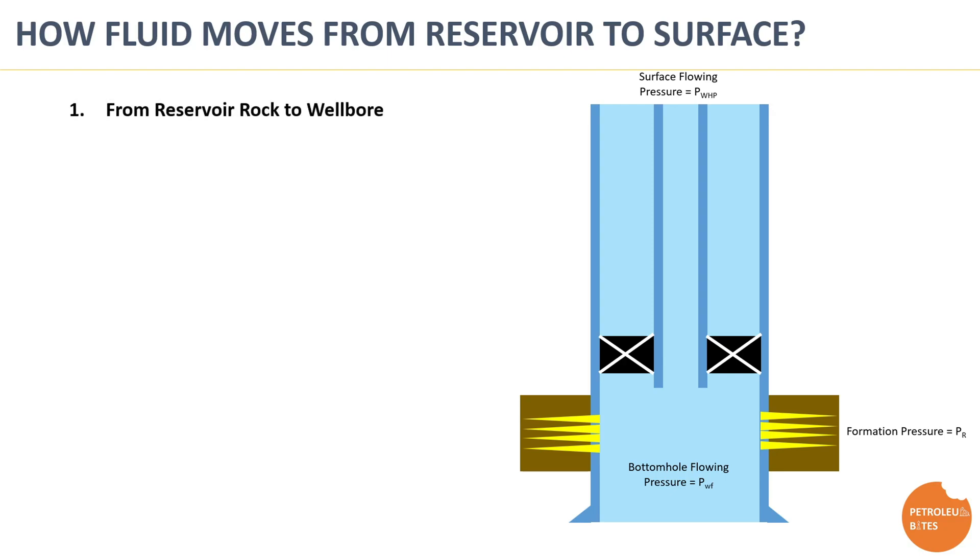This drawdown causes the movement of reservoir fluid through the rock pore spaces and open perforations to the wellbore. Produced fluid then moves upward through tubing string to surface at lower pressure, driven by the difference in pressure between bottom hole flowing pressure and the surface flowing pressure.